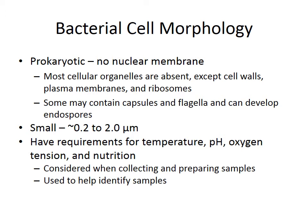Bacteria are very, very small, and that's something you probably learned in lab — you'll have to go down to the hundred times objective to see them. They have specific requirements for temperature, pH, oxygen tension, and nutrition. Each species is quite specific about those things, and we have to consider that when collecting and preparing samples. We can also use these characteristics to help us identify samples.